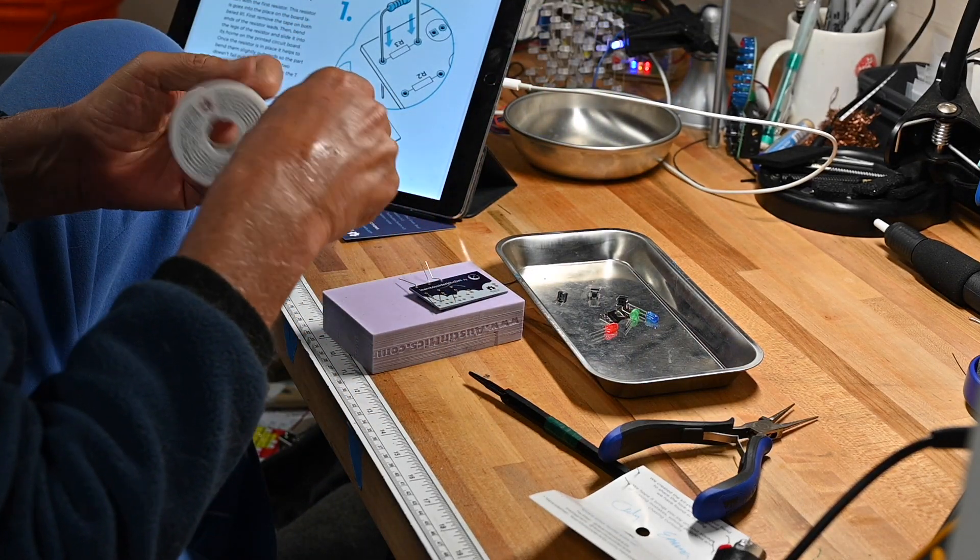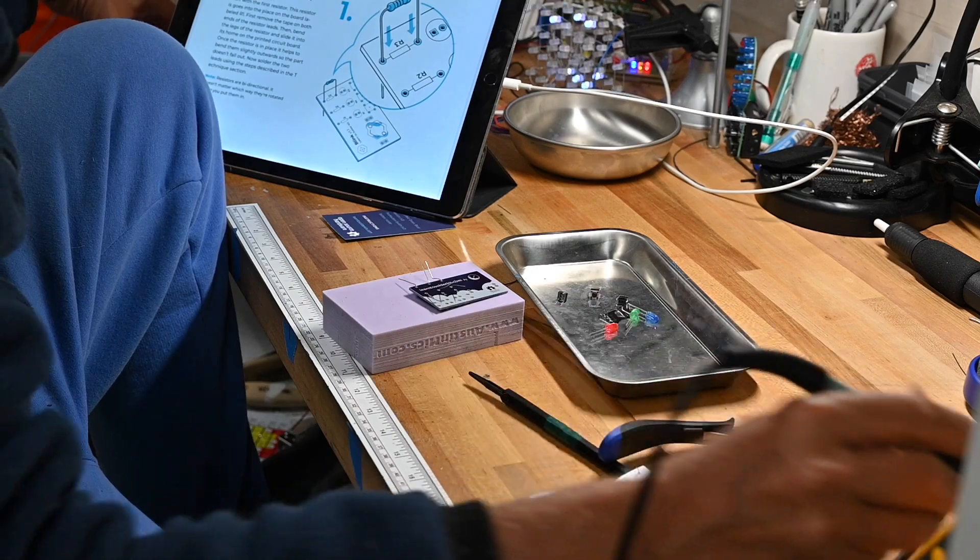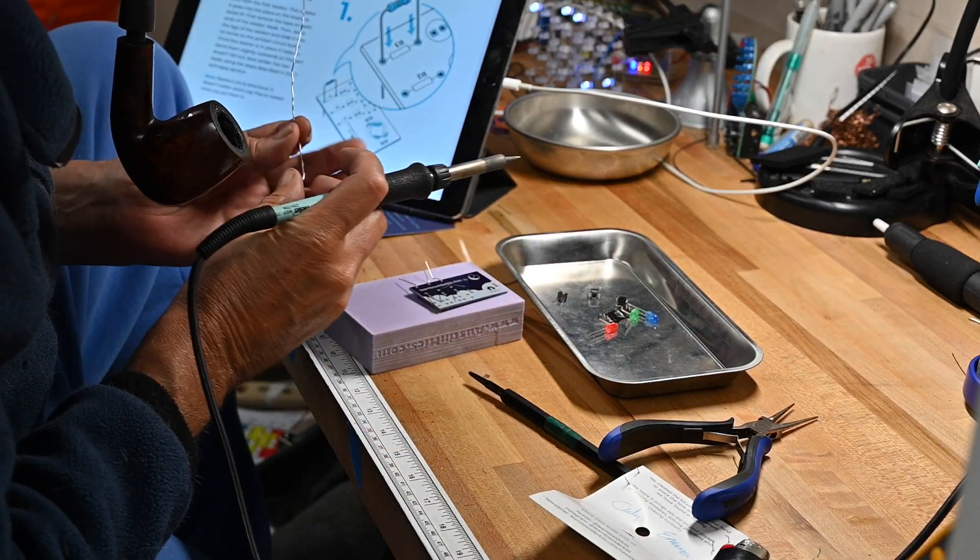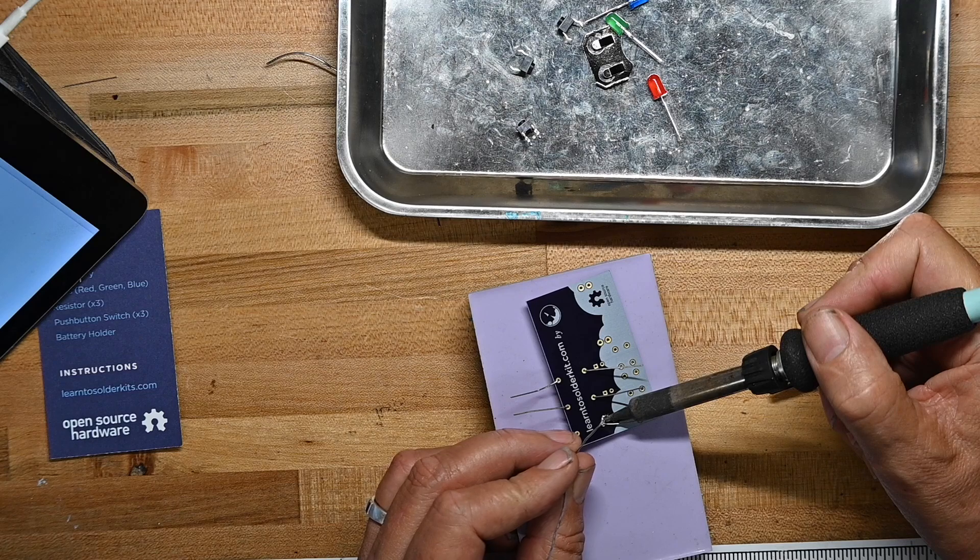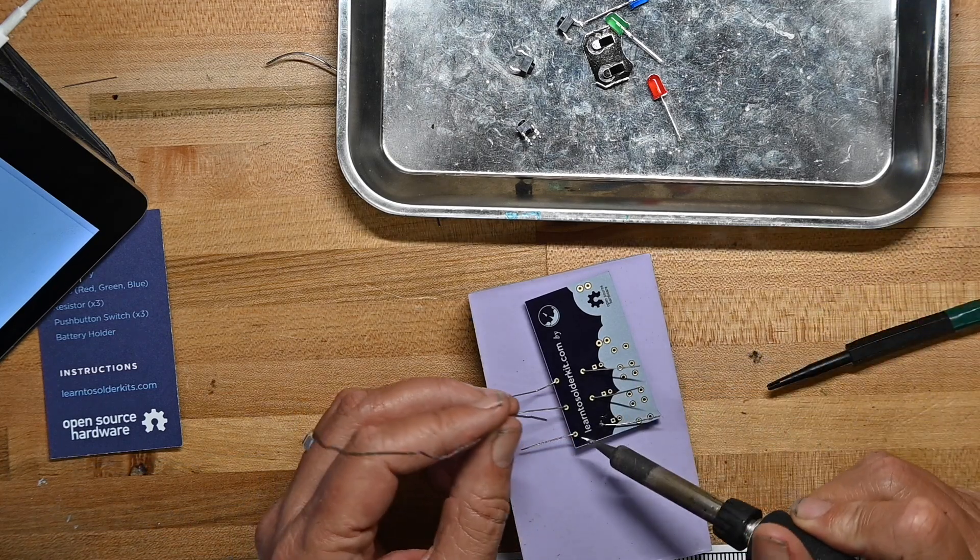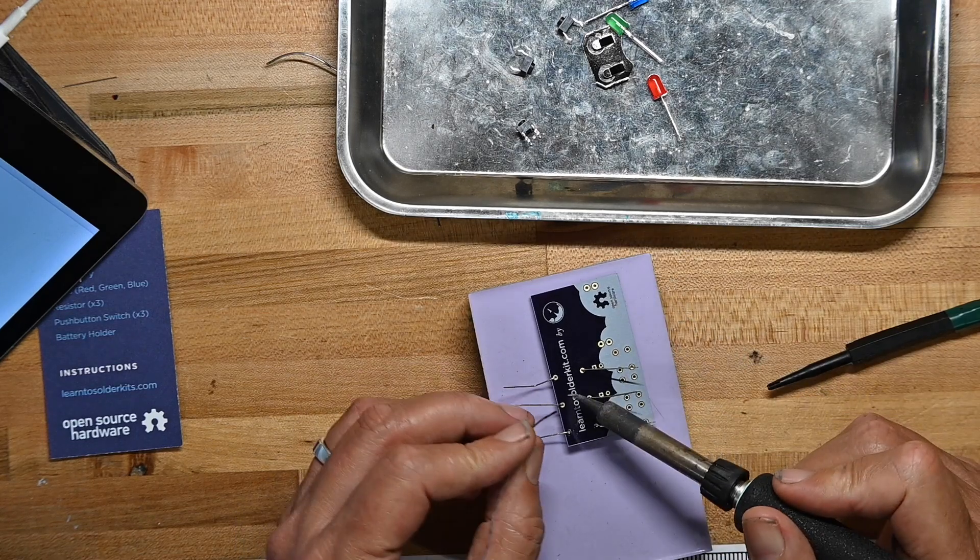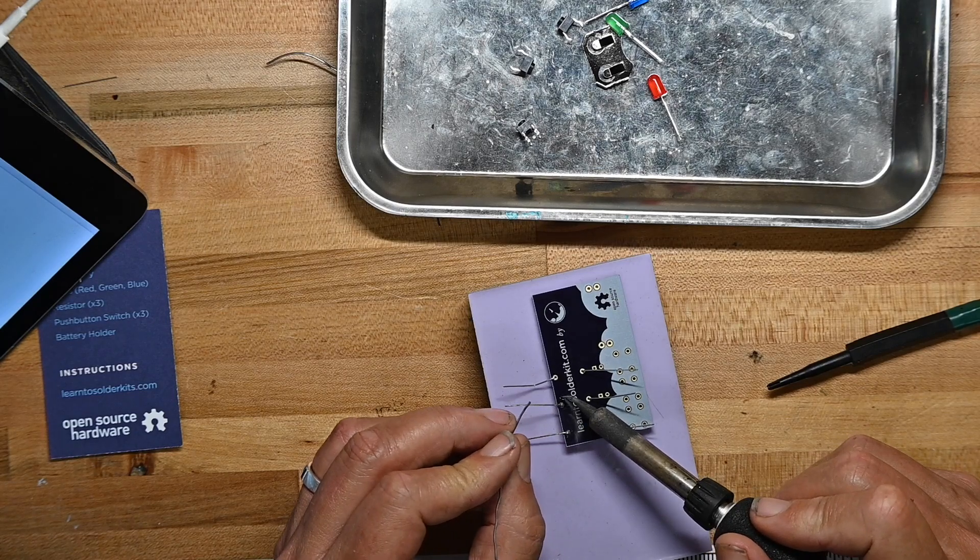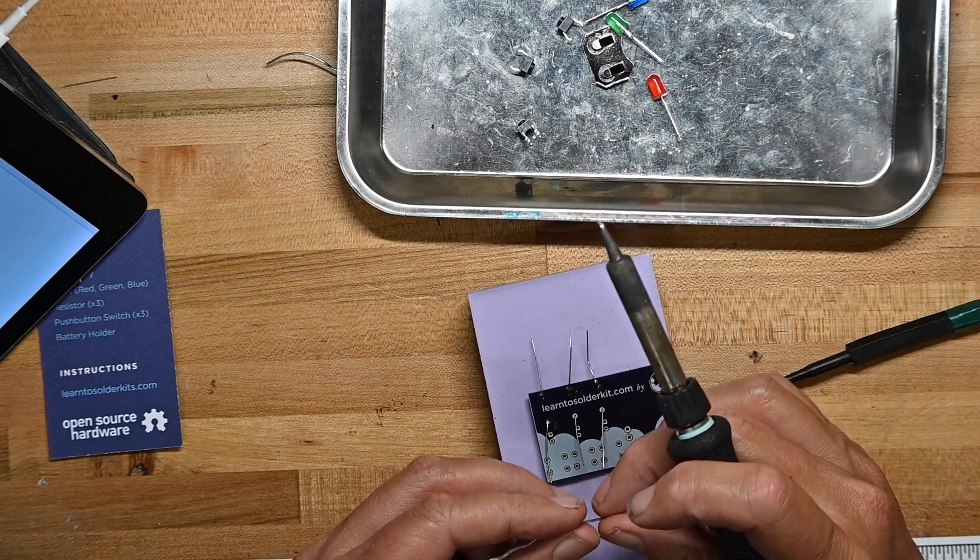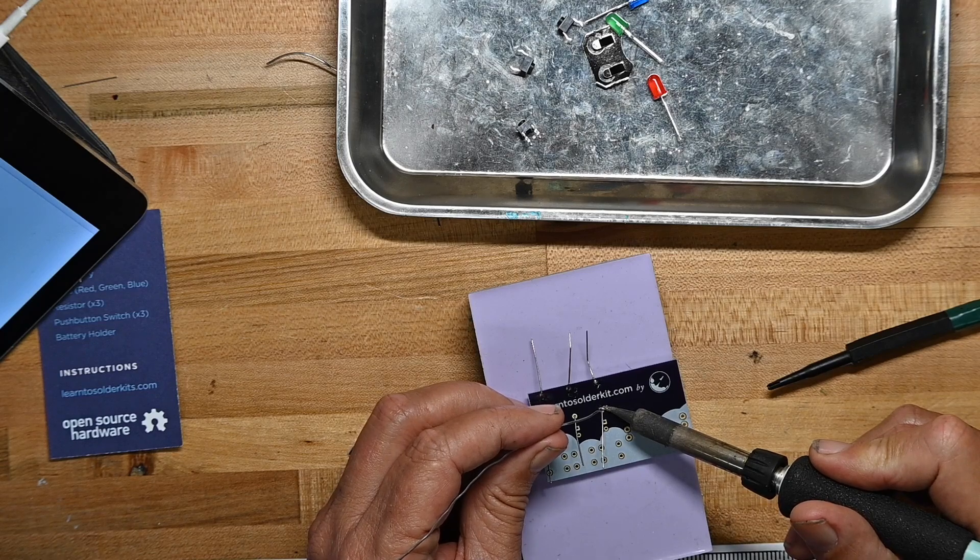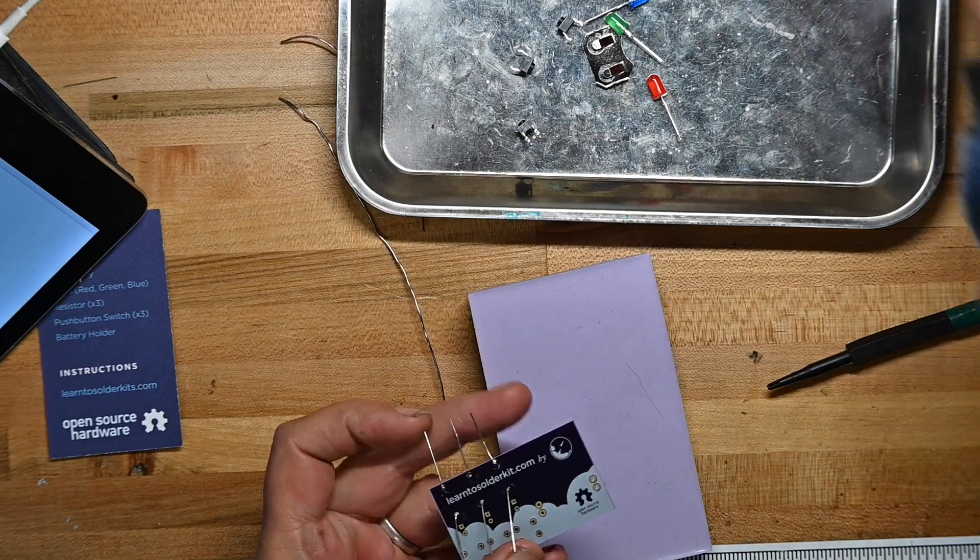I'm almost out of this roll of solder so I'm using it up. Let's see how the solder adheres to the board. That's pretty good. The circuit board material has a pretty good solder resist on it. Clip the leads off.